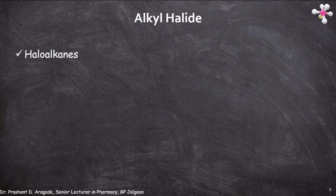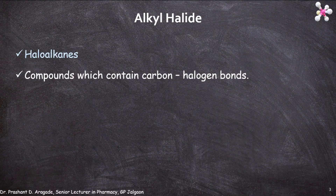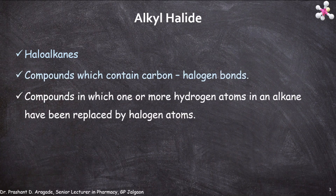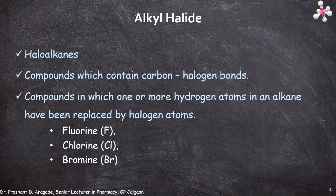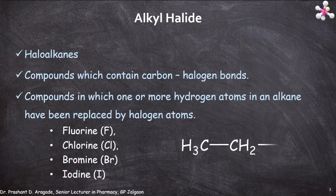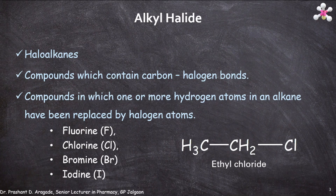Alkyl halides are also called as haloalkanes. The compounds which contain carbon-halogen bonds are called as alkyl halides — meaning compounds in which one or more hydrogen atoms in an alkane have been replaced by halogen atoms such as fluorine, chlorine, bromine, and iodine. For example, in ethyl chloride, a hydrogen of ethane is replaced by a chlorine atom, which is a halogen. That's why it is called as ethyl chloride, and it is known as an alkyl halide or haloalkane.